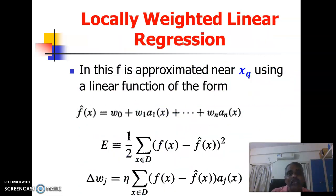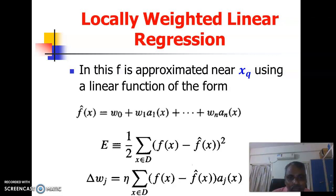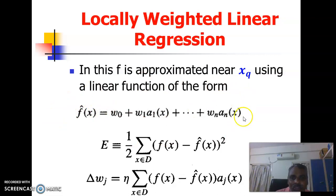Now we will consider a specific locally weighted regression function — a linear function — which we call the locally weighted linear regression method. In this, f is approximated near x_q using a linear function of the form: f-cap of x = w0 + w1·a1(x) + w2·a2(x) + ... + wn·an(x). All powers of the variables are 1, which is why it is a linear function. We need to find these w values.